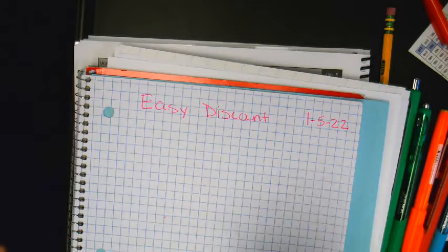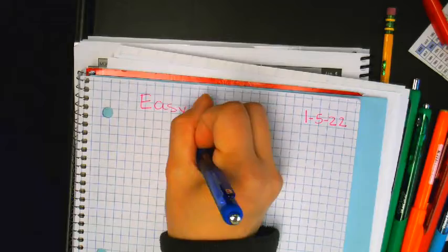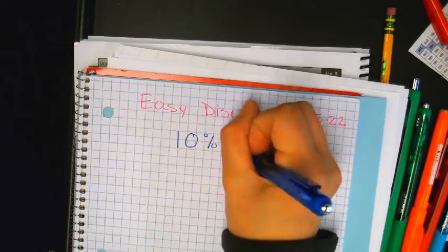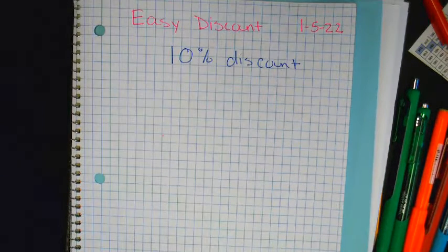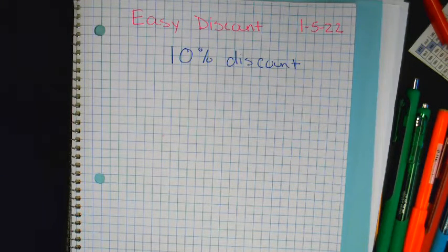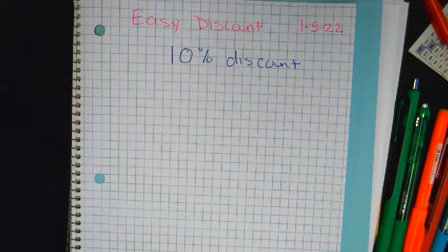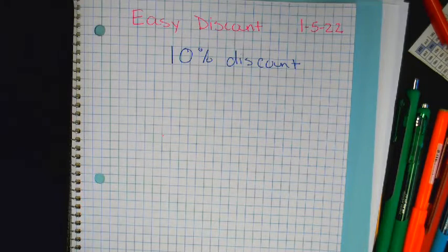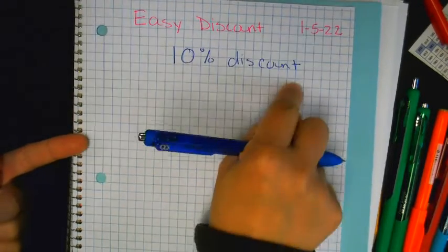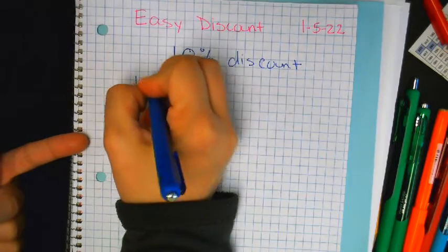I'm going to show you the 10% discount shortcut. My mom uses this shortcut, and when I was a little kid and she used to do this, I would be like, wow, she's really good at math. Then I got a little older and I realized, oh I see her shortcut. It amazed me as a young child that she was able to do this math so quickly, but then I discovered it's a shortcut. Here is the shortcut — the 10% shortcut. I want to know what is 10% off of 50 dollars.